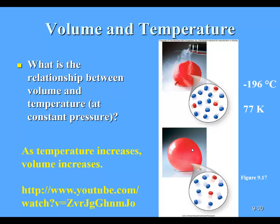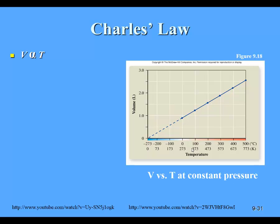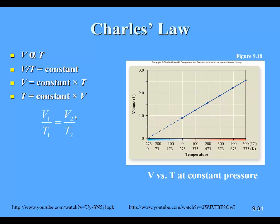What we're seeing with this relationship — Charles' Law — is that volume is directly proportional to temperature. If I divide both sides by temperature, volume divided by temperature equals a constant. I could solve for either volume or temperature by multiplying the other side by the second variable. Under changing conditions, similar to what we did with Boyle's Law, we have V1/T1 equal to a constant, and V2/T2 equal to that same constant. So I can relate initial volumes and temperatures to final volumes and temperatures in the following equation.